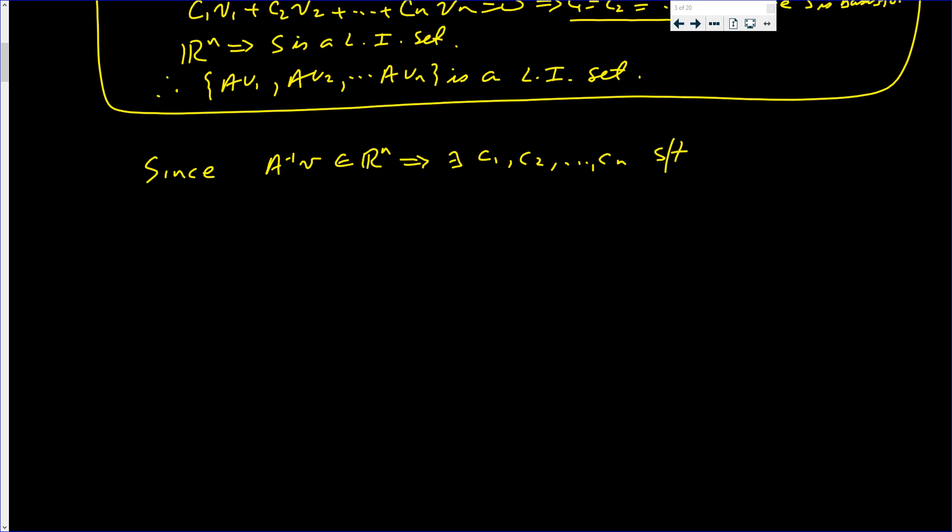Such that A^(-1)V is equal to C1v1 plus C2v2, all the way up to Cnvn. This is just an arbitrary vector in V.